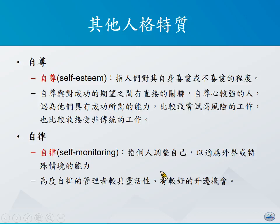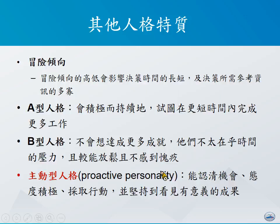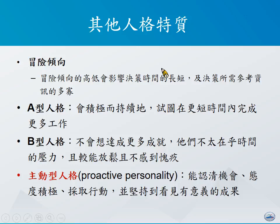因此，自尊跟自律对于员工的表现都会有直接的显著影响。此外，还有冒险形象与A型、B型人格这样子的差异。冒险形象影响的是决策时间的长短，对于冒险形象较高的人而言，通常决策时间较快，较容易用直觉或仰赖少部分的资料就快速地做出决策；而对于冒险形象较低的人而言，他们可能需要很长的时间才能下达决策，并且在决策过程当中，希望自己能够搜集到越多的资讯越好。